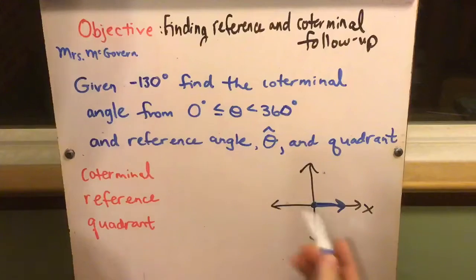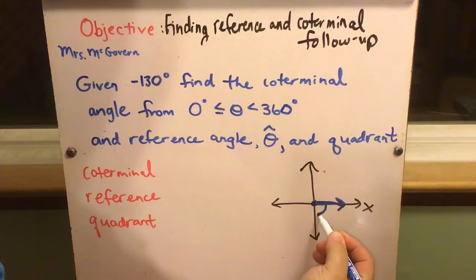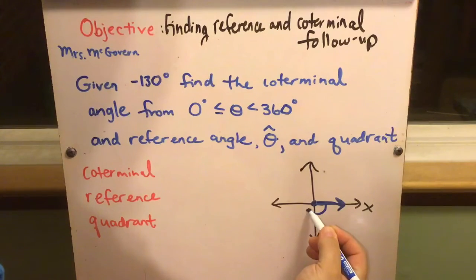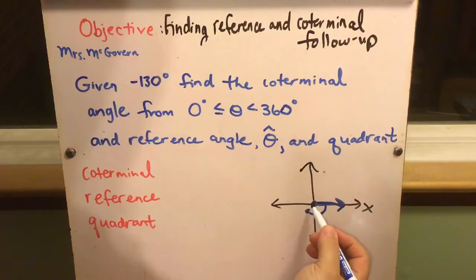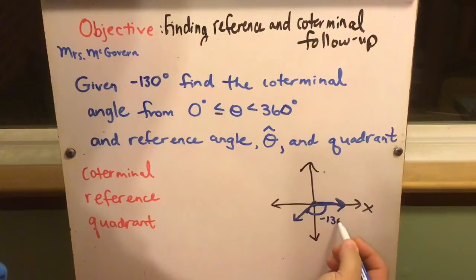For negative 130, you're going to move negative 90 and a little bit more. You're not going all the way to 180 because it's 130. So you can draw the terminal side and you've drawn negative 130.